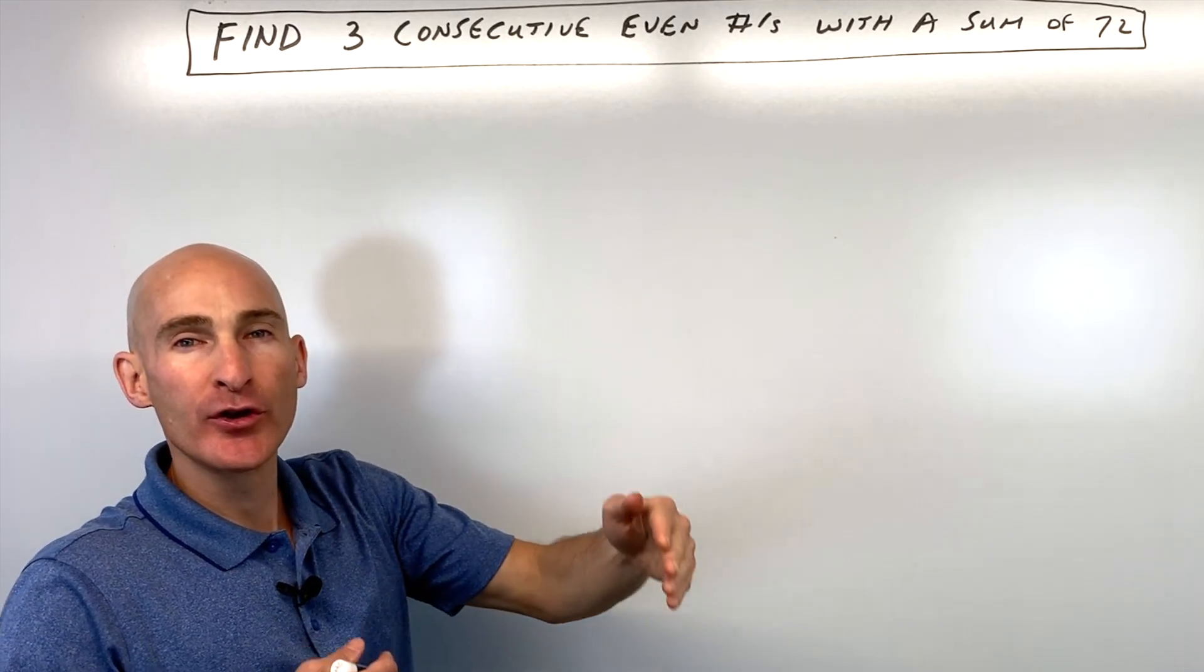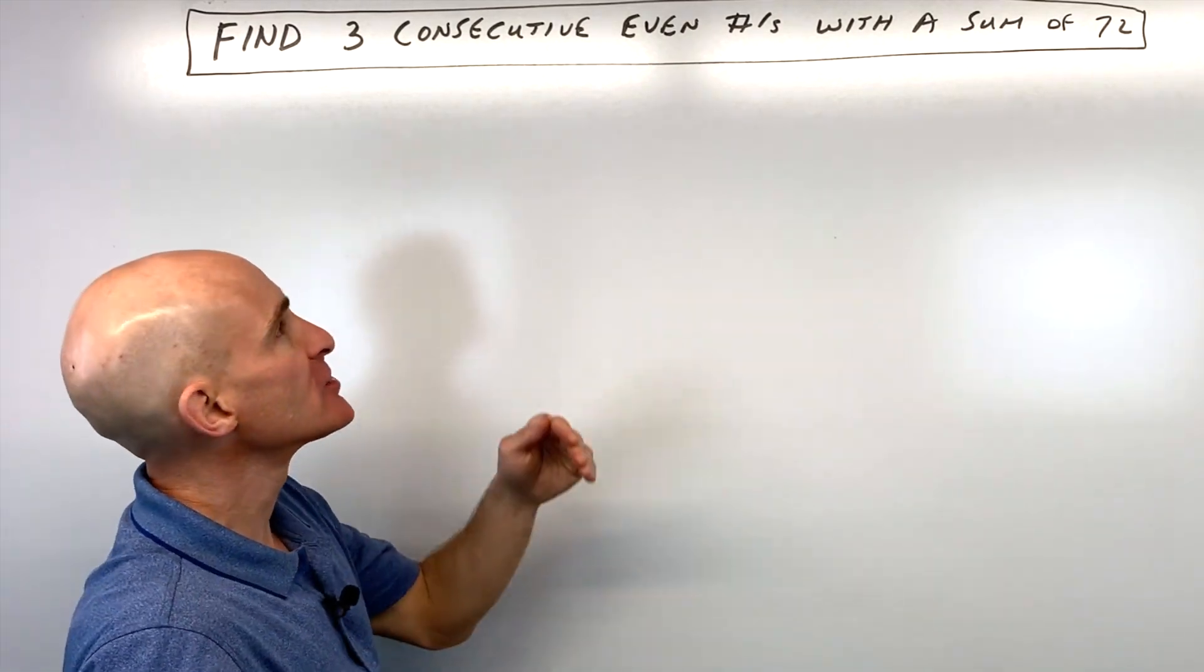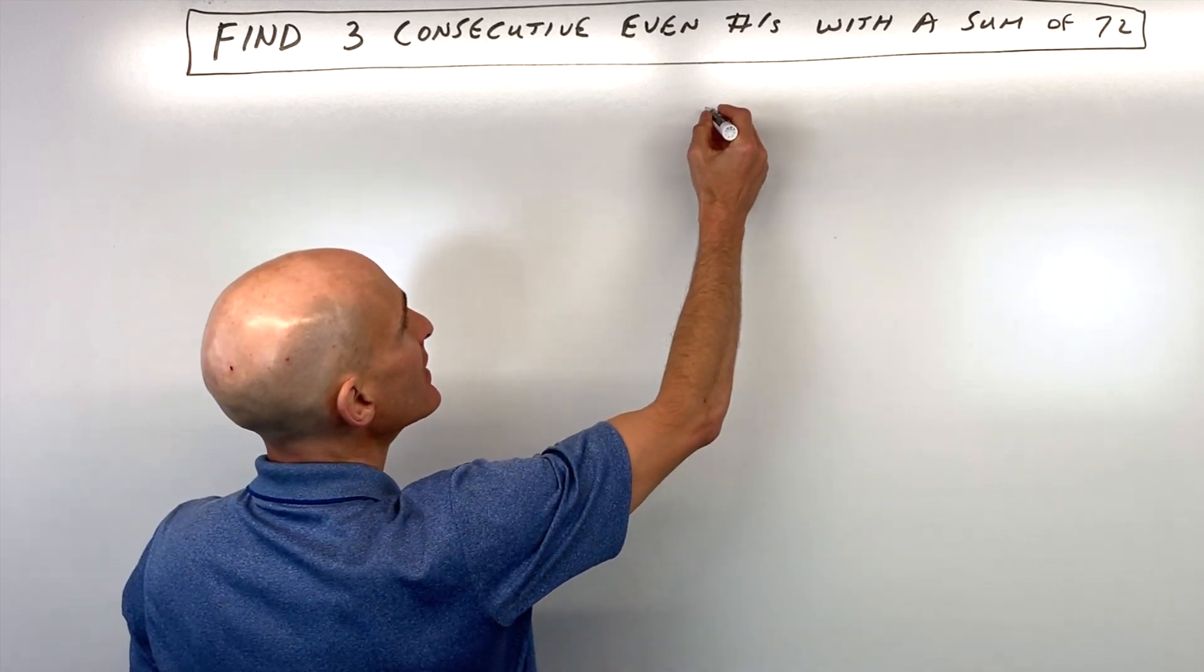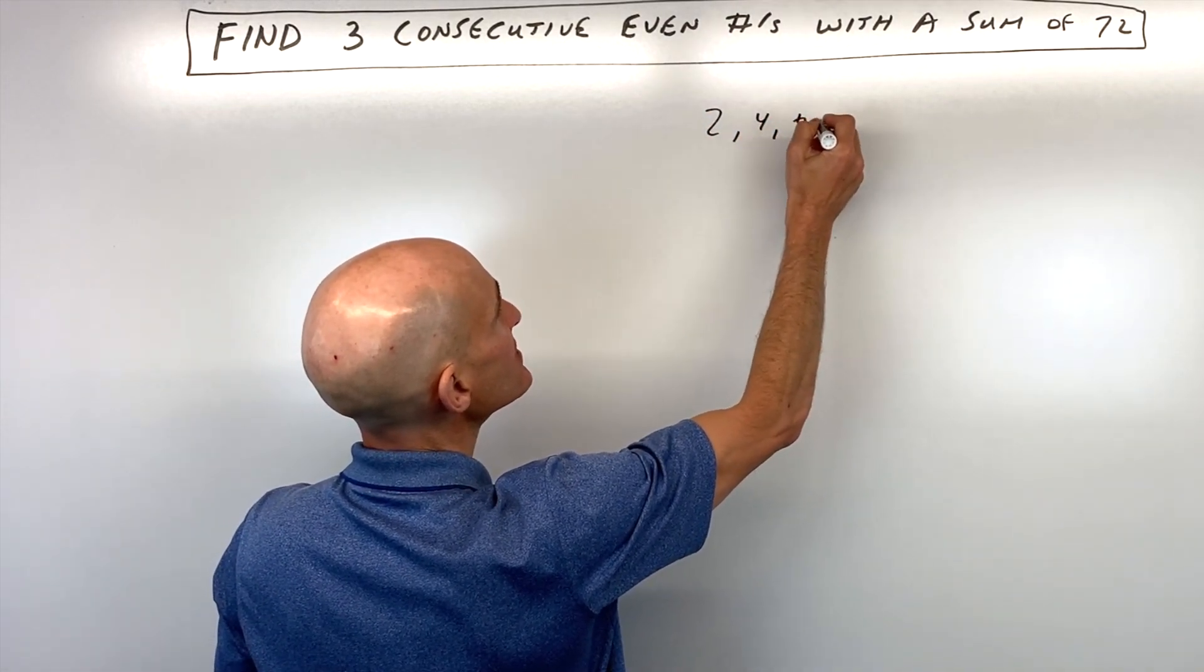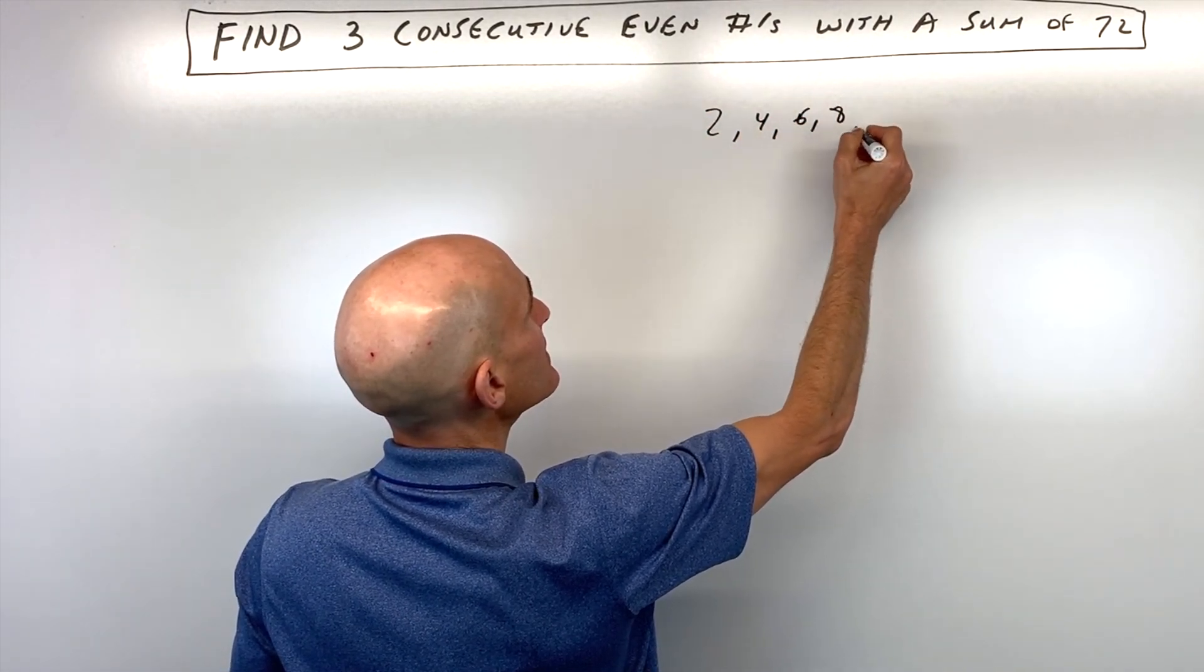So when we're talking about consecutive, we're talking about one right after another. And even numbers look something like this: 2, 4, 6, 8, etc.